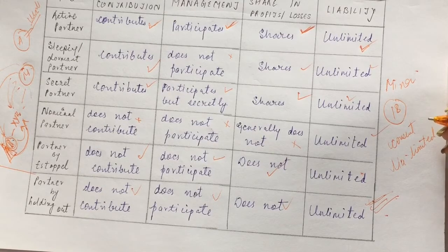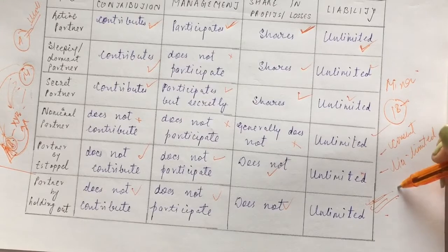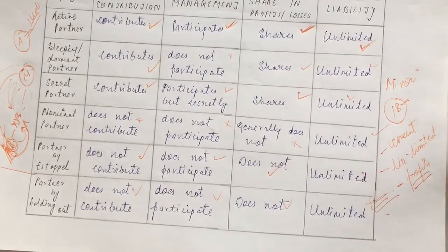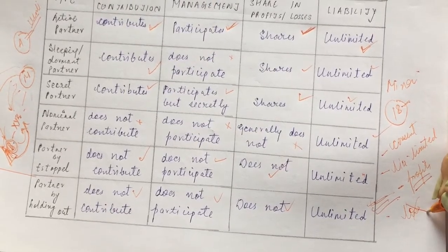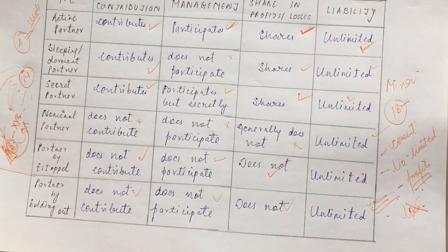The minor can contribute capital. However, they do not actively participate in management, as they are a minor and assumed not to have sufficient skills. A minor shares in profits only — if there is a profit they receive a share, but they do not participate in losses, unless they voluntarily choose to. A minor can also inspect the accounts of the firm.